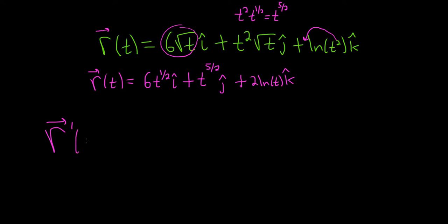So r prime of t. So let's see here. Here we can use the power rule. So 1/2 times 6, that's going to give us 3t. And then we subtract 1. So 1/2 minus 1 is negative 1/2. And we still have the i-hat.